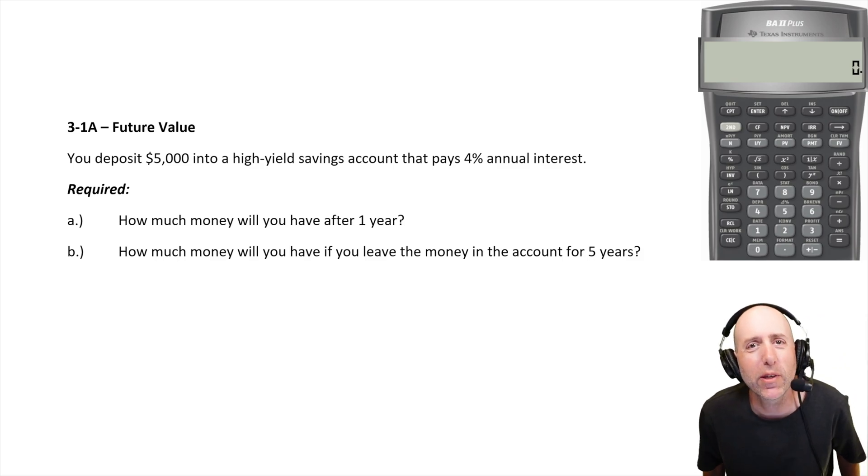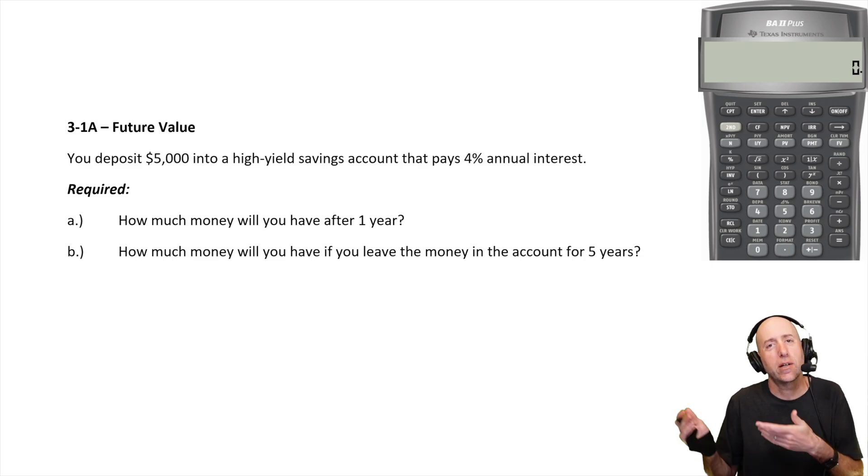Let's take a look at problem 3.1A, the first in our series on time value of money. So we deposit some money in an account. It's going to grow for a while and we got to figure out, well, what's it going to be when we go to withdraw it a year or five years from now. You deposit $5,000 into a high yield savings account that pays 4% interest. How much money do you have after a year?